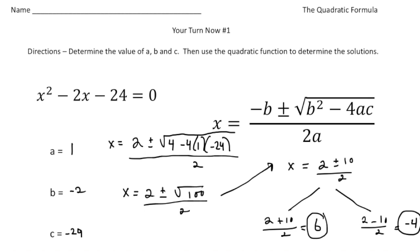Welcome back. Let's see how you did on the first your-turn problem. The solution should have been 6 and negative 4. The a is 1, the b value is negative 2, and the c value was negative 24. When I plug it into the formula, you get 2 plus or minus the square root of 4 minus 4 times 1 times negative 24, which ends up being 100 inside the radical sign. So it's 2 plus or minus the square root of 100, divided by 2 — that's 2 plus or minus 10. So 2 plus 10 is 12, and 12 divided by 2 is 6. Then 2 take away 10 is negative 8, and negative 8 divided by 2 gives you negative 4.